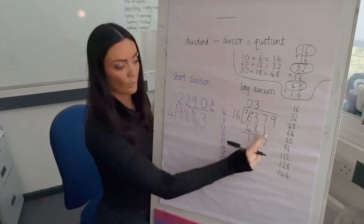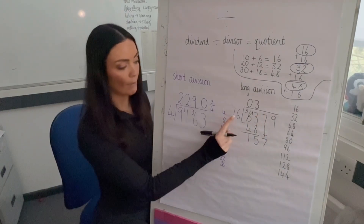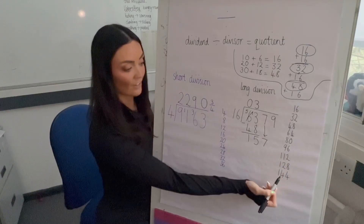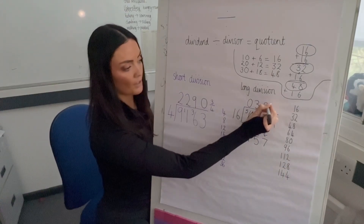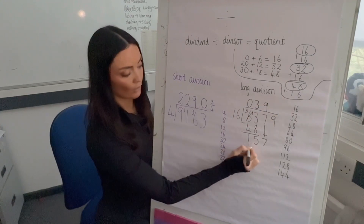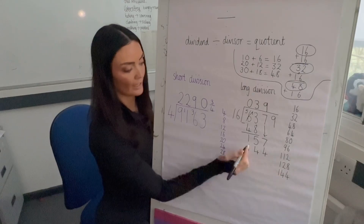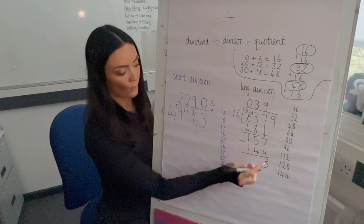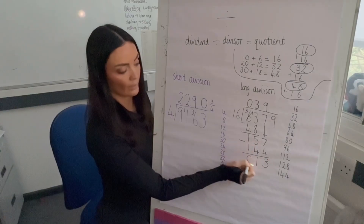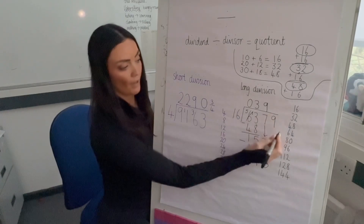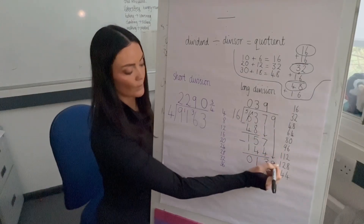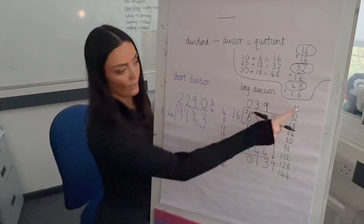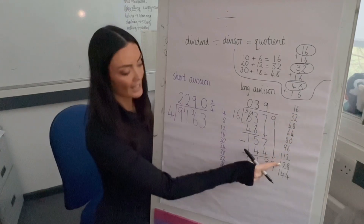With short division we wrote the remainder up top, but in long division we bring the next digit down instead. So rather than writing 15 up here, we bring the 7 down to make 157. How many equal groups of 16 in 157? Counting: nine groups. Write 9 on top, write 144 underneath, and subtract: 7 − 4 = 3; 5 − 4 = 1; 1 − 1 = 0. Remainder is 13.